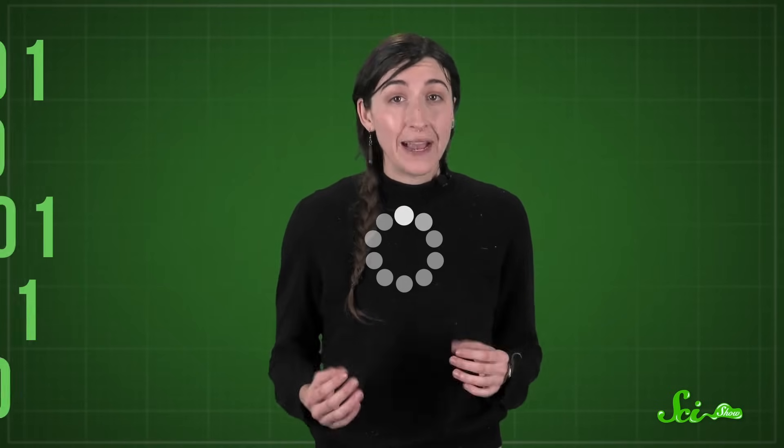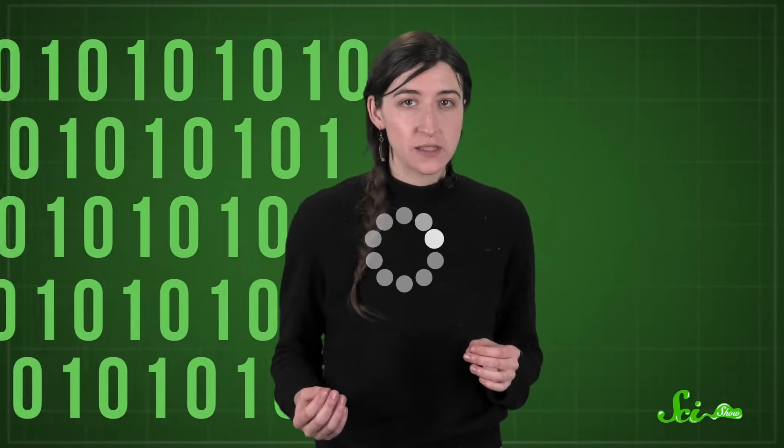When you clicked on this video, your computer sent a message to a computer at YouTube that might be states or countries or continents away. It didn't know how to get the message there, but it sent it anyway. The message probably took about half a second to arrive and told YouTube's computers to search for a file, a set of ones and zeros practically indistinguishable from the billions all around it, and to send that file back to you. YouTube's computers then sent the file back to your computer piece by piece, where those ones and zeros were interpreted as the start of this video. And the ones and zeros are still streaming in, even while you're watching.